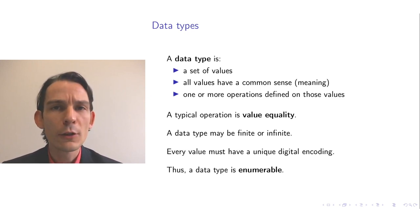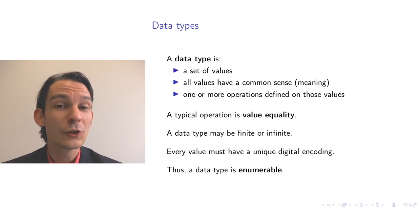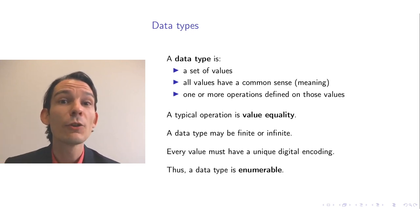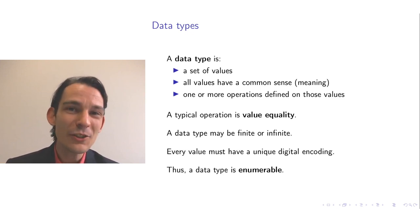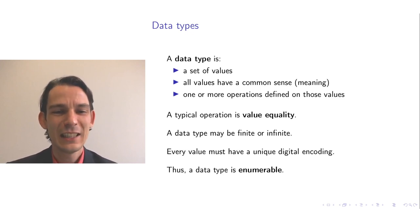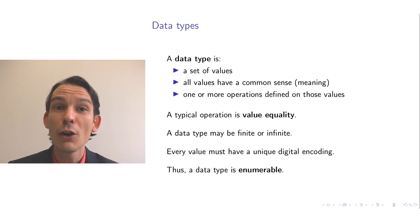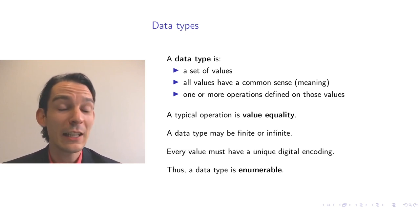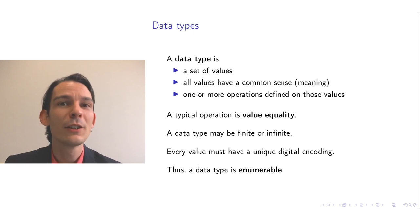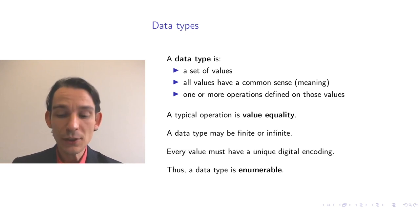Since we are computer scientists, it is necessary that values in a data type have a unique digital encoding, because then we can store values in the memory of a digital computer. Because every value has a unique digital encoding, data types are enumerable — you could try out all possible encodings and if it happens to be a value, you have your value. All the digital encodings can be enumerated: you start with one, go to two, to three, to four, using whatever binary format to represent those numbers.